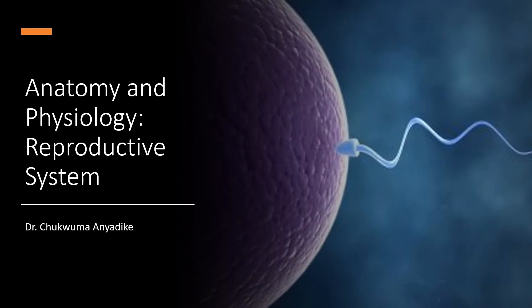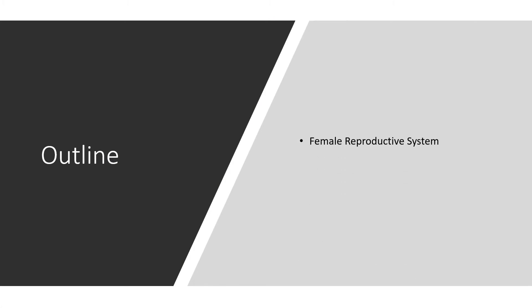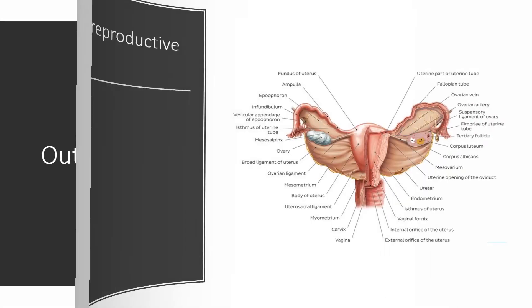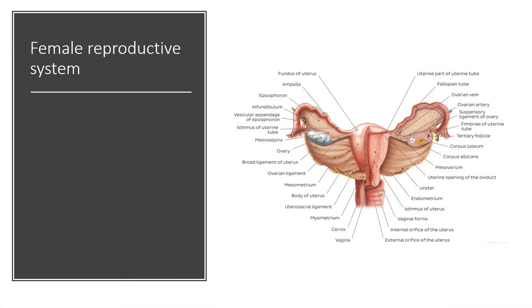Anatomy and Physiology: Reproductive System. The outline of this lecture is as follows: the female reproductive system, the female breast, and the male reproductive system. Let's talk about the female reproductive system.